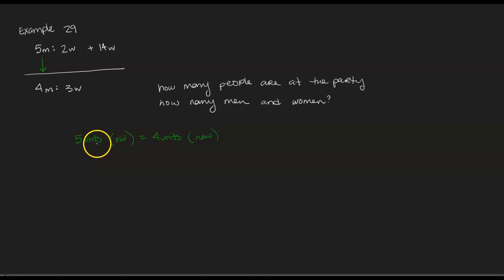When we say five units, we're not talking about five men, we're talking about five groups of men. So maybe a unit is like three or four men. So the five times the original units has to be equal to five times the new units. And then we can make a connection between the women units as well. So the two women units plus 14 actual women has to be equal to the three new women units.